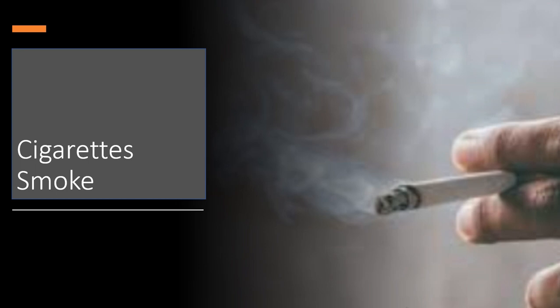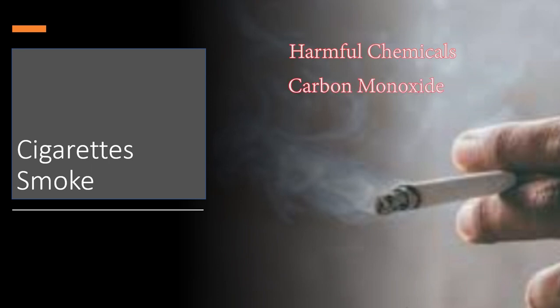Tobacco smoke contains many chemicals that are harmful to both smokers and non-smokers. There are more than 7,000 chemicals in tobacco smoke and at least 250 of them are known to be harmful. The examples of pollutants produced by cigarette smoke are some harmful chemicals, carbon monoxide, soot and smoke.